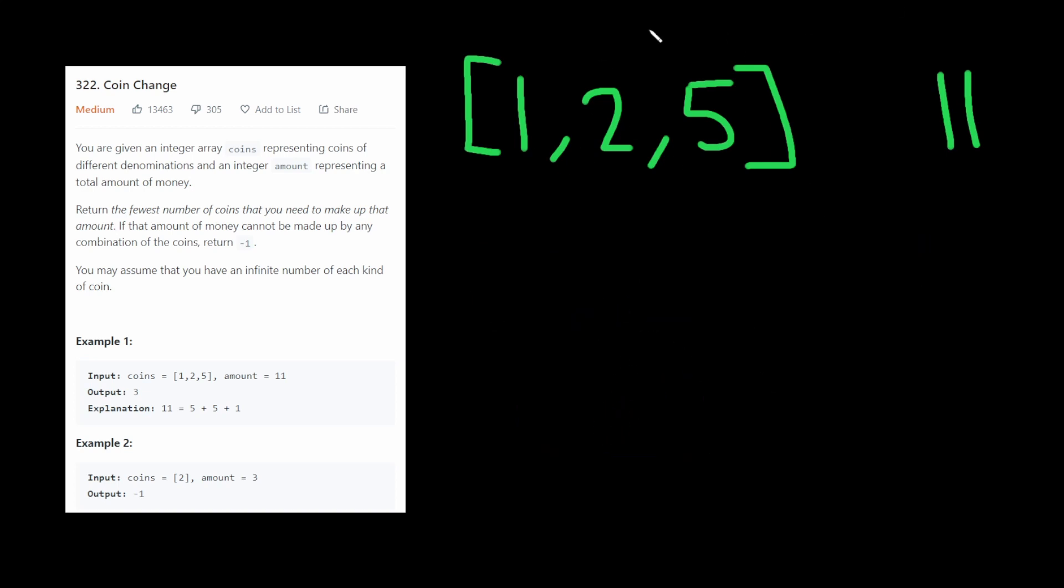So back to this example here, how would this algorithm work? Let's try with the 1 first. We do this, so it becomes 10, right? And then we would try it again with 1, and so on and so forth. This would take a while, so I'm not going to write the whole thing out. Then we would try the same thing like this, and then we would try it with 10 minus 2, and so forth.